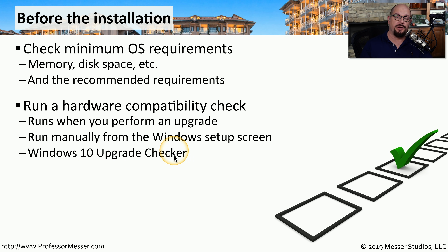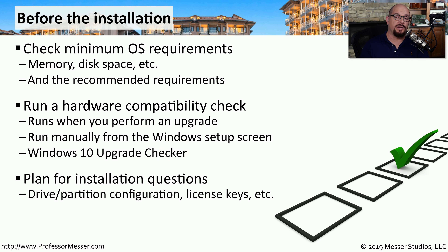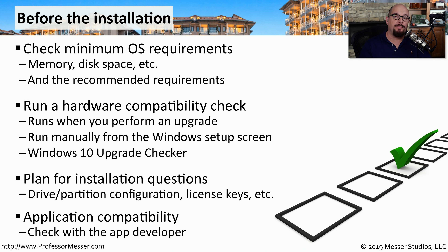It will automatically check your hardware and let you know if it's ready to install Windows 10. During the installation process, you'll have a number of questions you have to answer. You'll need to know which drive and partition you want to install this operating system on, and you may be asked for license key information during the installation as well. You also want to check to make sure that the applications you're using in your existing operating system will work properly in your new operating system.